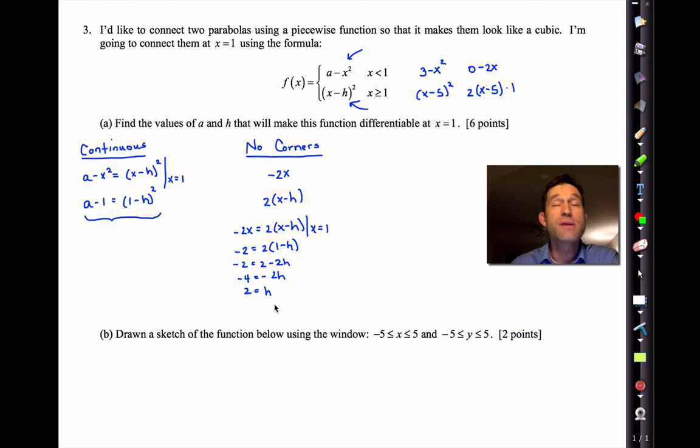Now, given that there's no a, what that means is I could choose any a I want right now, and I wouldn't have a corner as long as h is 2. But most likely, I wouldn't be continuous. So when we pair this condition up with this condition, that's going to be very easy to do because all we have to do is substitute h equals 2 in. So we do a - 1 = (1 - 2)². This is going to be, -1 squared is 1, and a is also 2. So when a is 2 and when h is 2, what happens is we've got both the continuity condition satisfied and the no corner condition. And that is going to make the function differentiable.